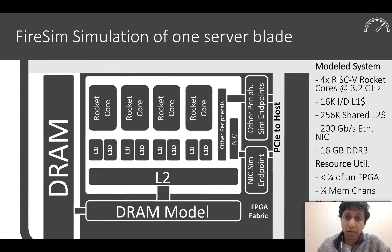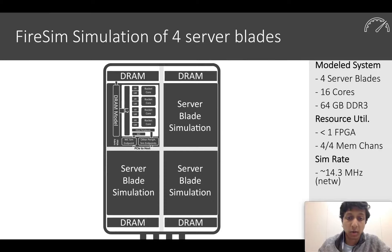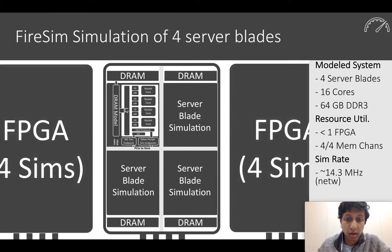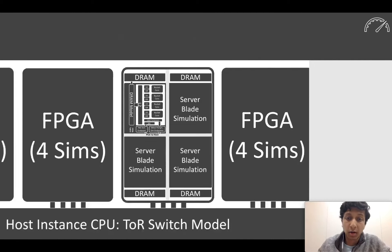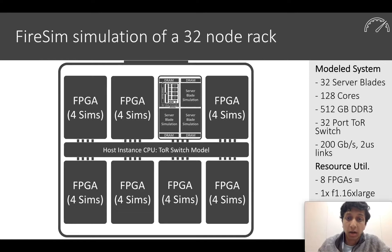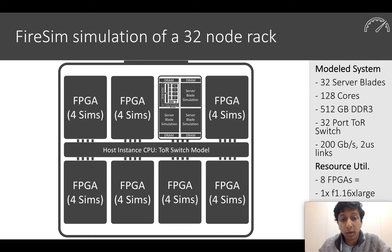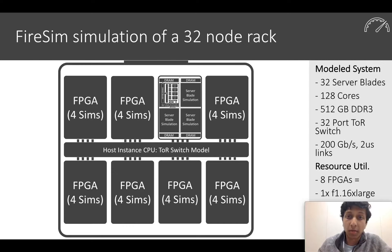In FireSim, we can scale out, running multiple simulations networked together by an Ethernet network model, eventually scaling to something like a 32-node rack-scale simulation across 8 FPGAs. Here we have 32 copies of that SOC design, networked together using a top-of-rack switch model that correctly models a 32-node rack of systems.